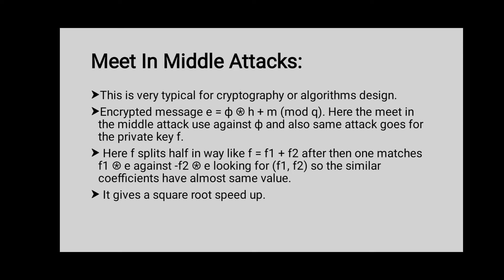F is split in half such that F equals F1 plus F2. Then one matches F1*E against minus F2*E, looking for F1 and F2 whose similar coefficients have almost the same value. In order to achieve a security level of 2^80, you have to pick F, G, and phi from sets containing around 2^160 elements. This gives a square root speed-up over brute force.